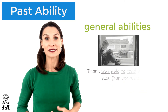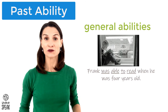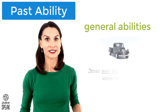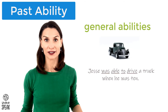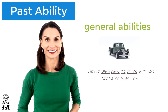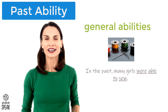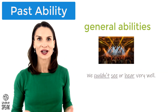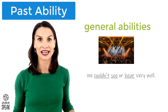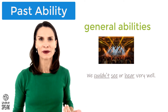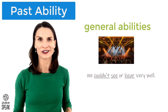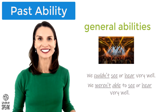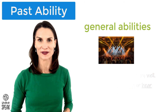Frank was able to read when he was four years old. Jesse was able to drive a truck when he was 10. In the past, many girls were able to sew. We went to a concert last night — we sat in the back, and we couldn't see or hear very well. Or: we weren't able to see or hear very well.